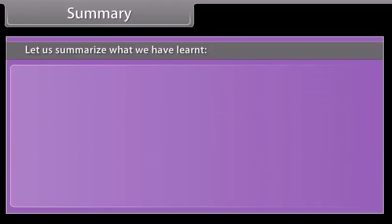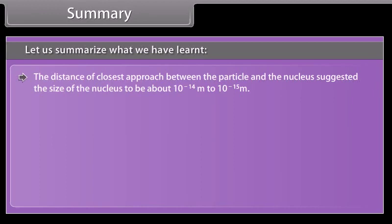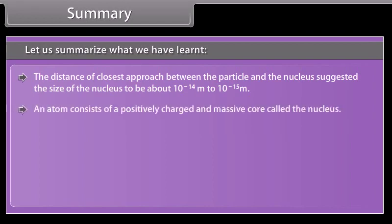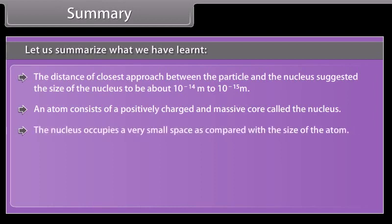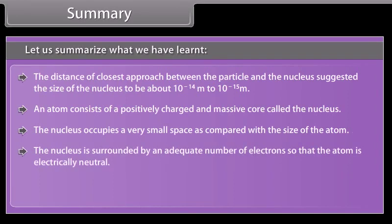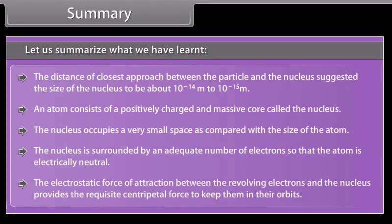Summary. Let us summarize what we have learned. The distance of closest approach between the particle and the nucleus suggested the size of the nucleus to be about 10^-14 meter to 10^-15 meter. An atom consists of a positively charged and massive core called the nucleus. The nucleus occupies a very small space as compared with the size of the atom. The nucleus is surrounded by an adequate number of electrons so that the atom is electrically neutral. The electrostatic force of attraction between the revolving electrons and the nucleus provides the requisite centripetal force to keep them in their orbits.